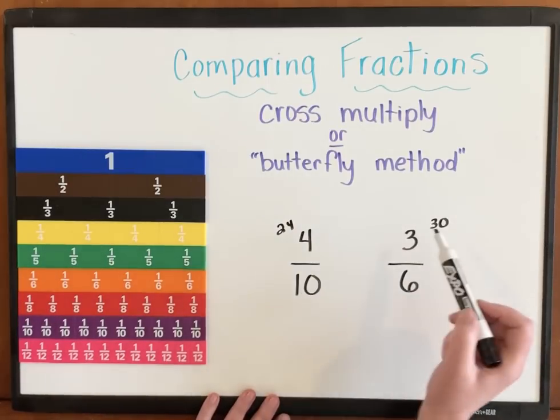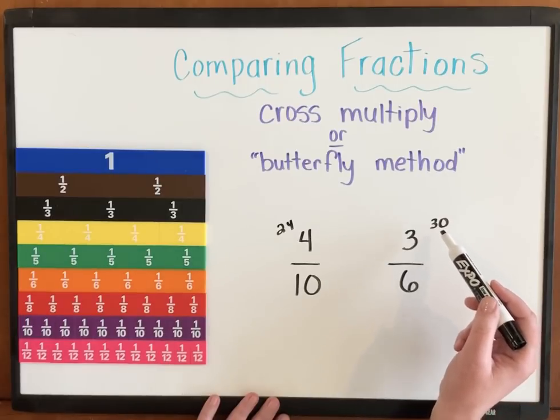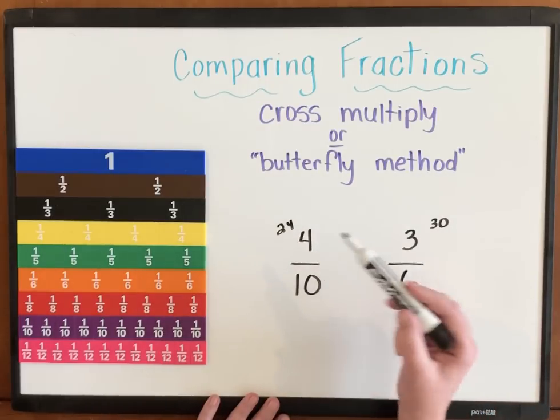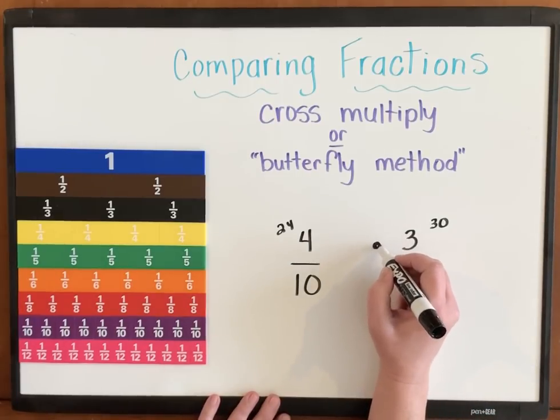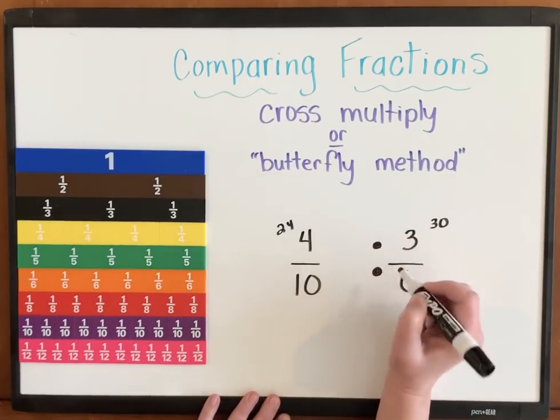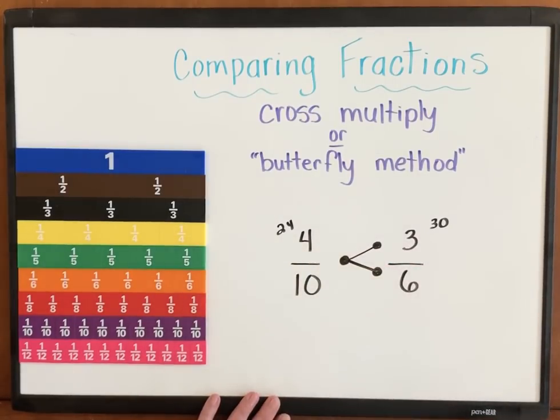24 and 30. What is greater? 24 or 30? Clearly 30 is much more than 24, which means 3/6 is greater. So 3/6 gets 2 dots. 4/10 gets 1 dot. And I'm going to connect my dots.